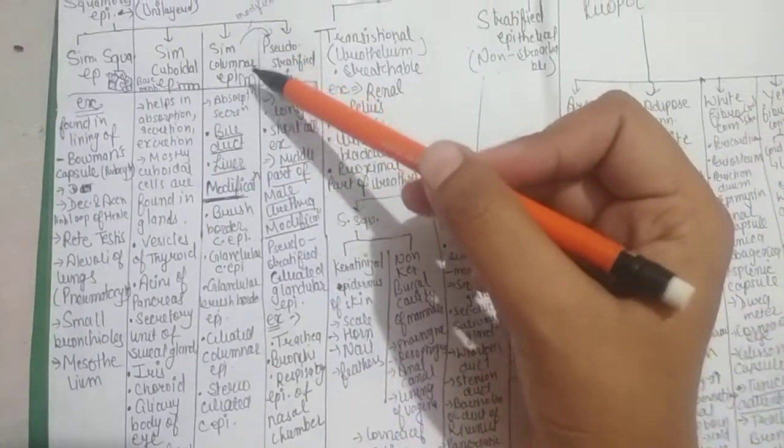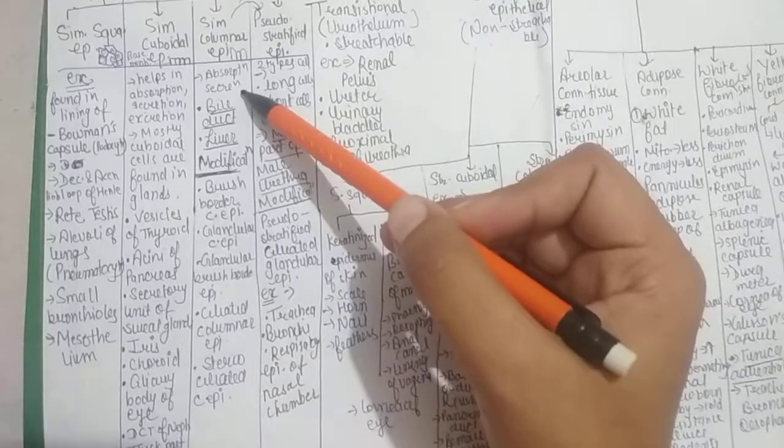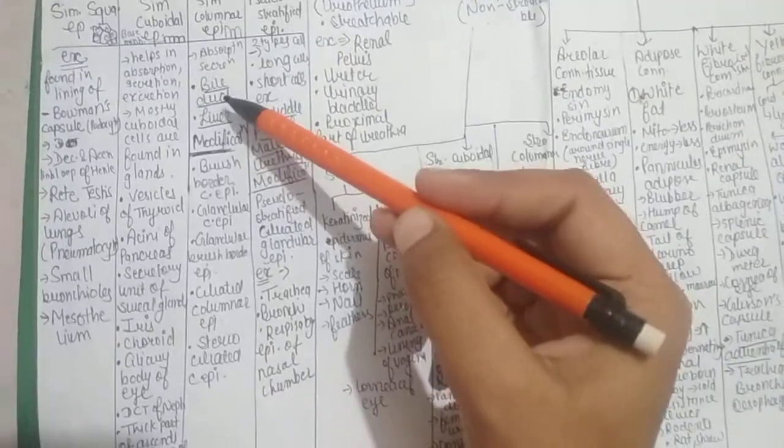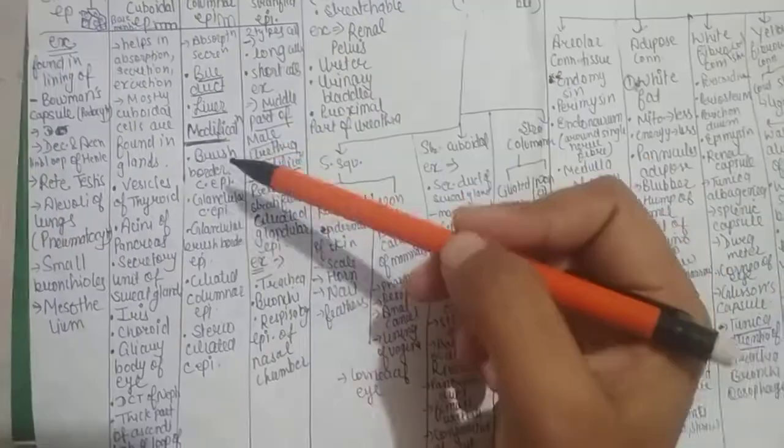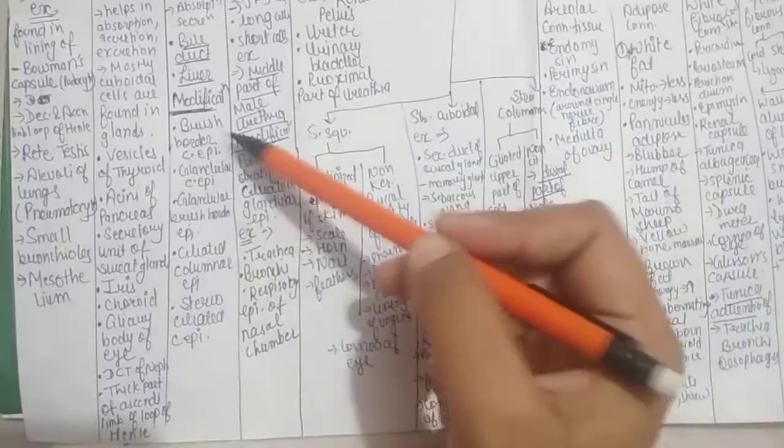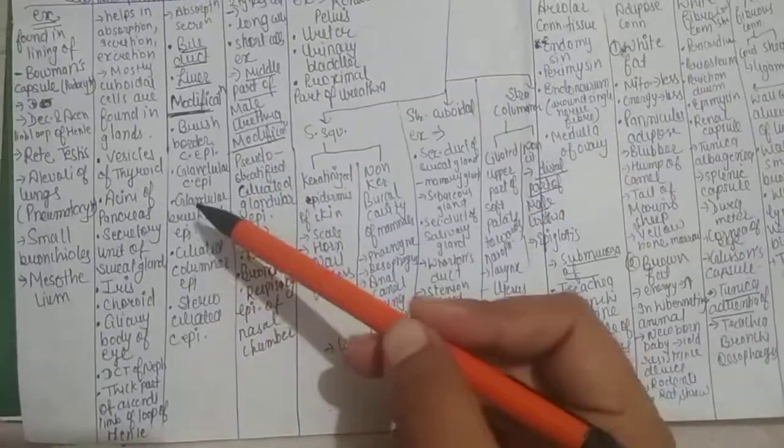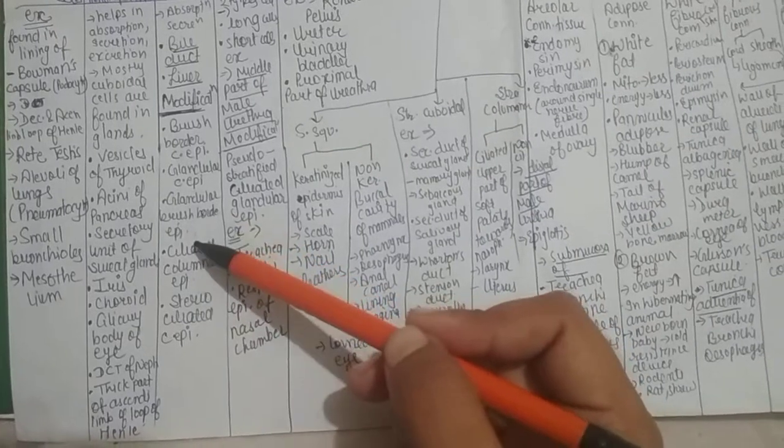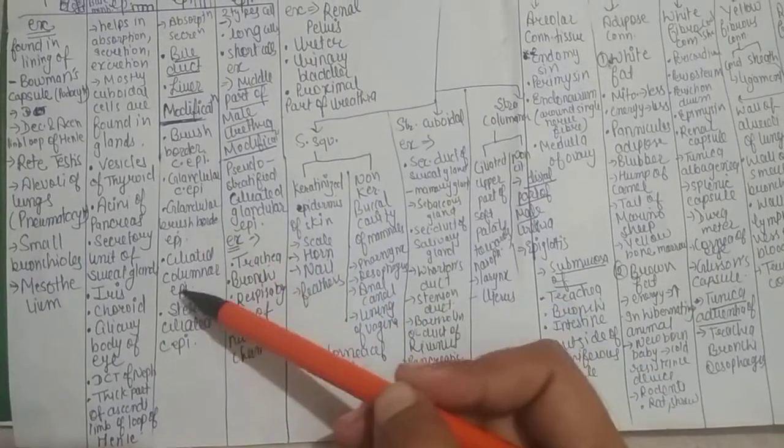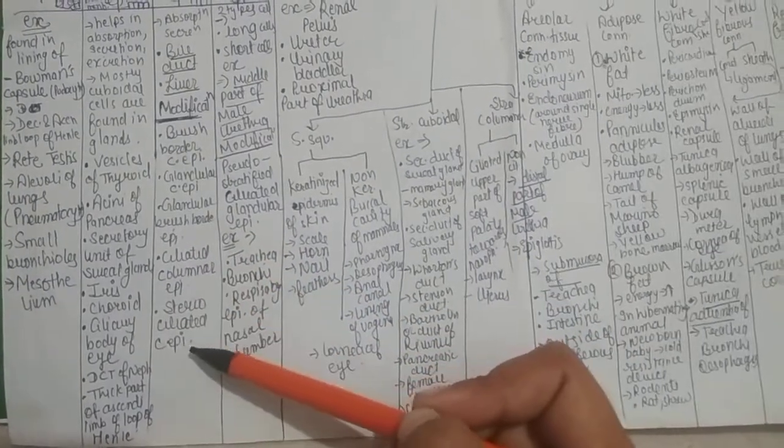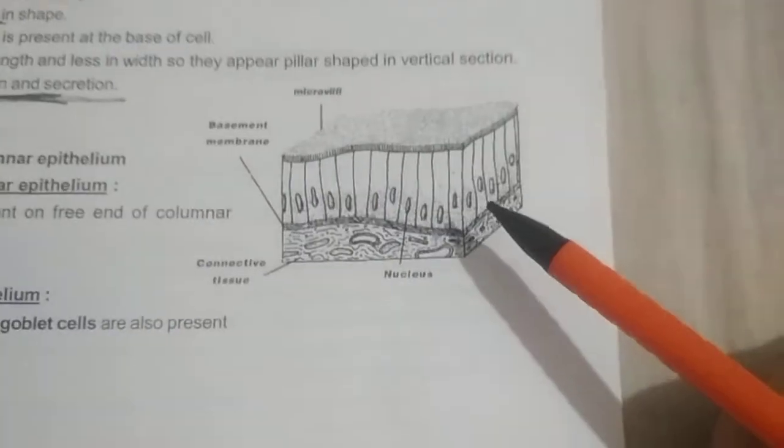Next, simple columnar epithelium functions in absorption and secretion and is found in bile duct and liver. Its modifications include brush border ciliated columnar epithelium, glandular columnar epithelium, glandular brush border epithelium, ciliated columnar epithelium, and stereociliated columnar epithelium. Diagram.